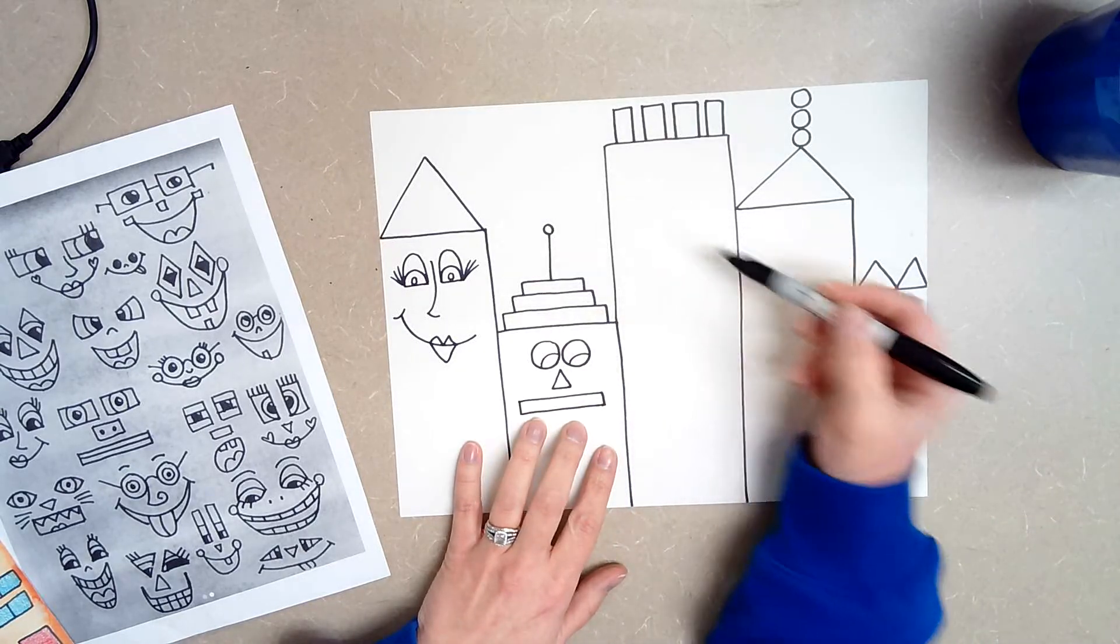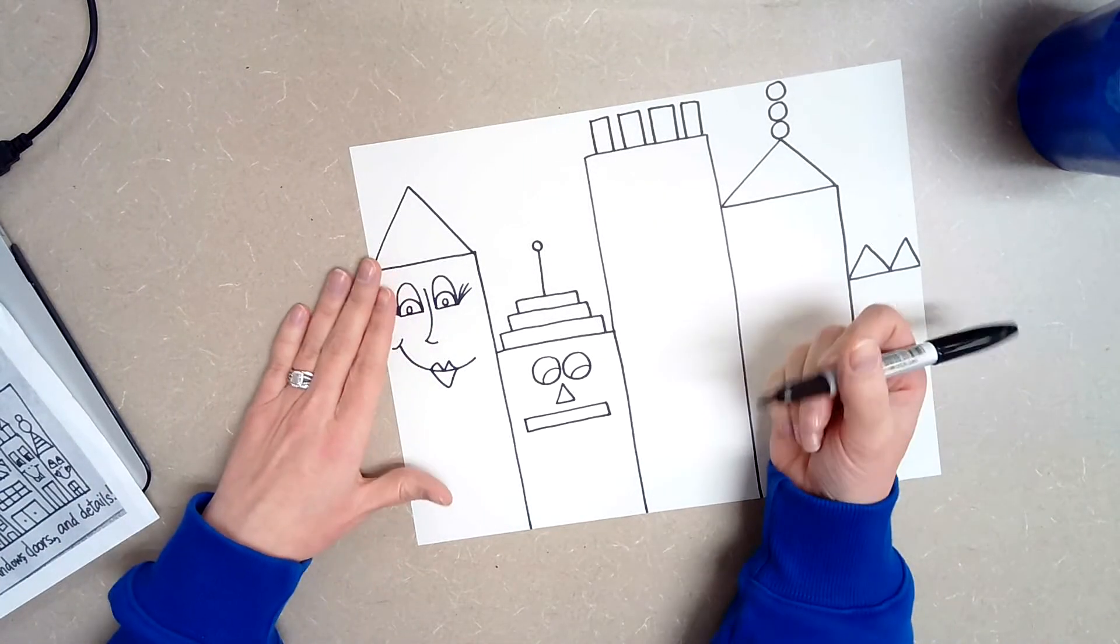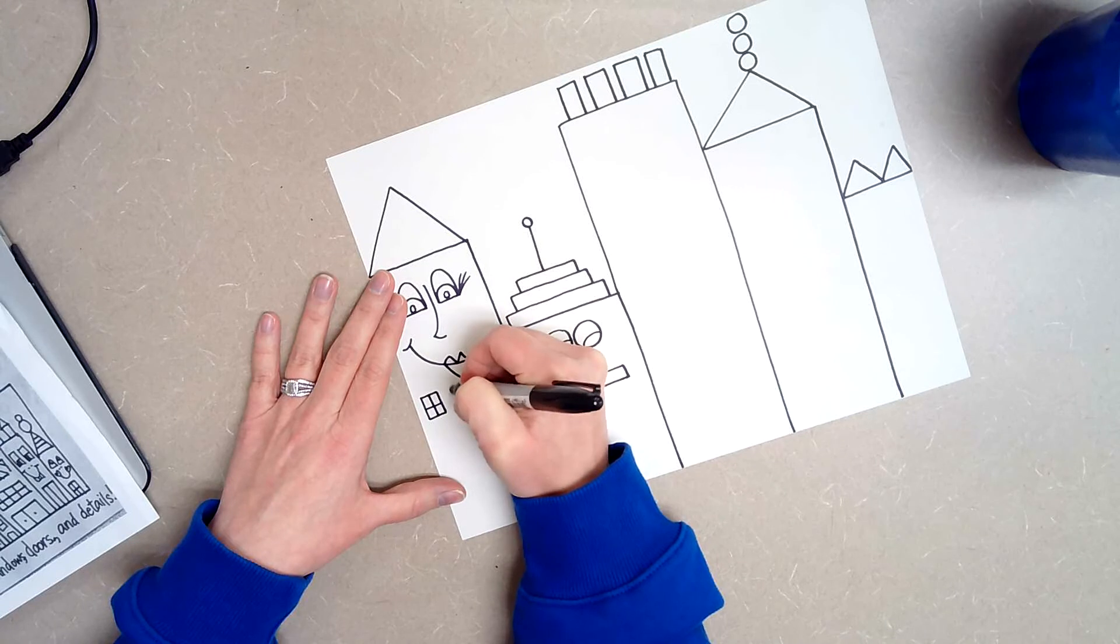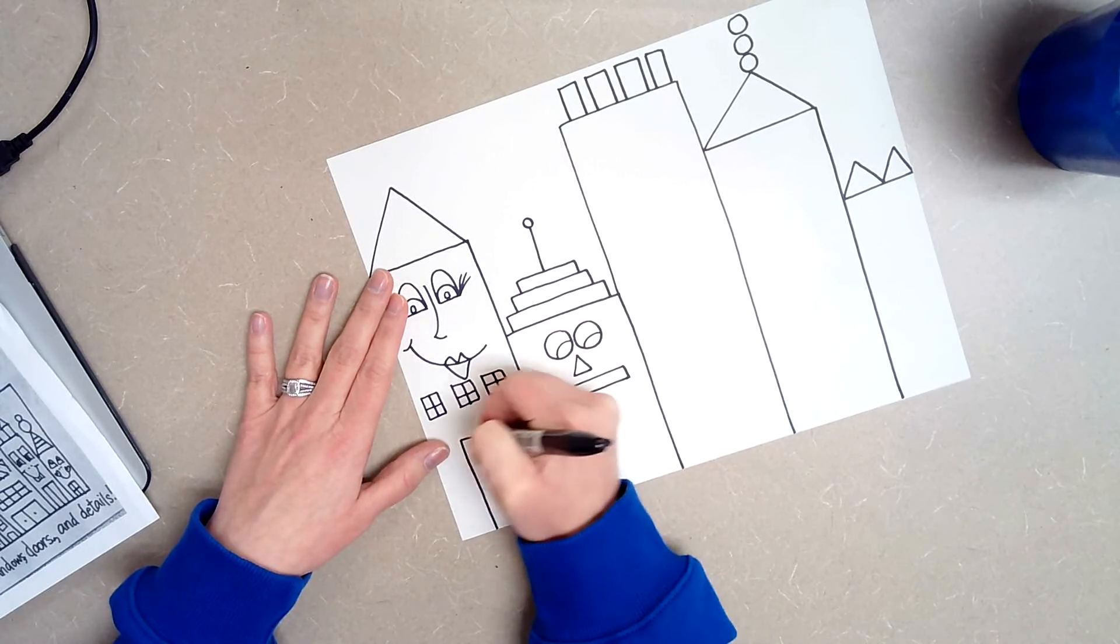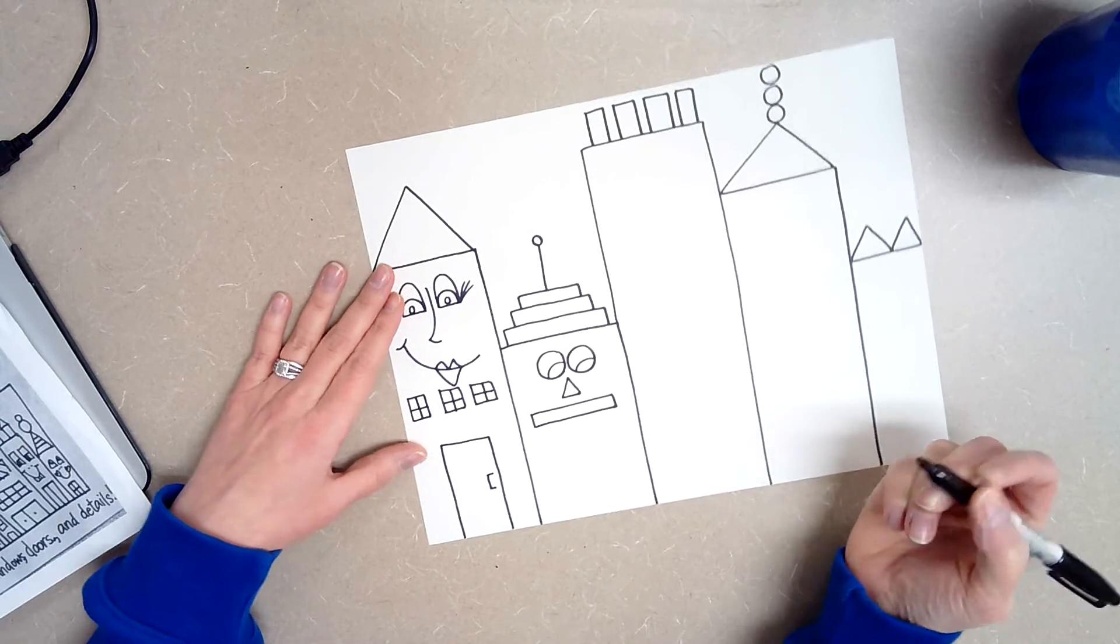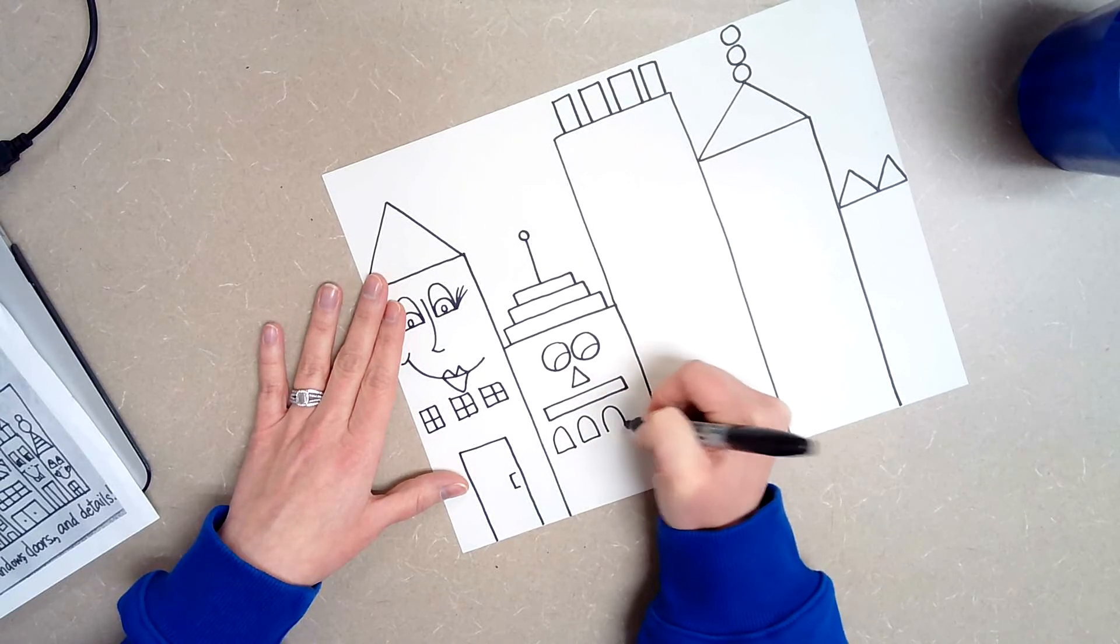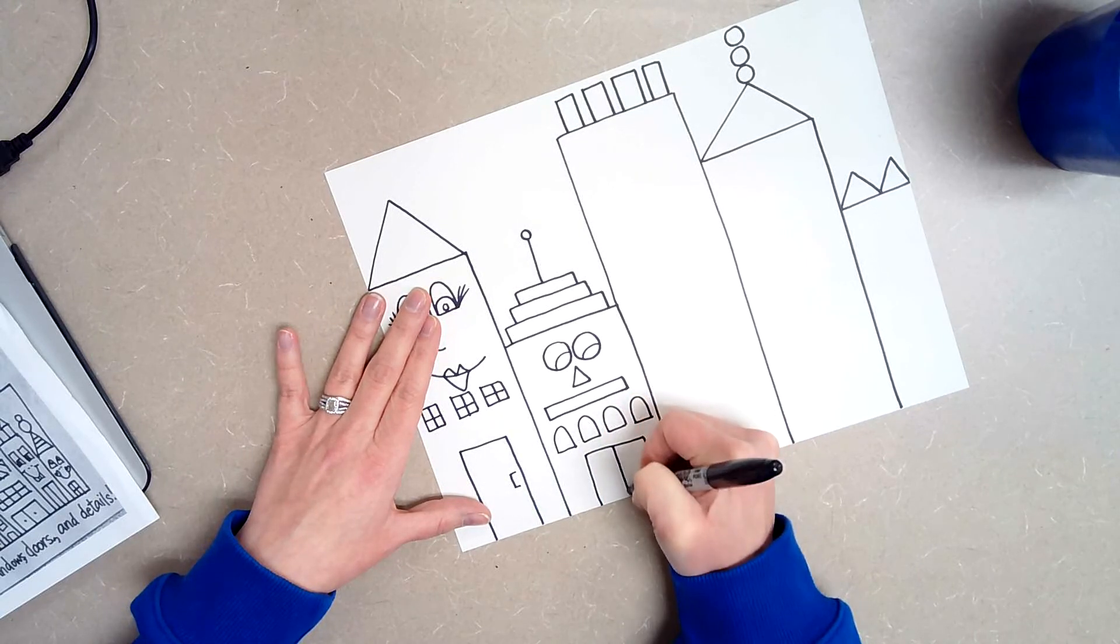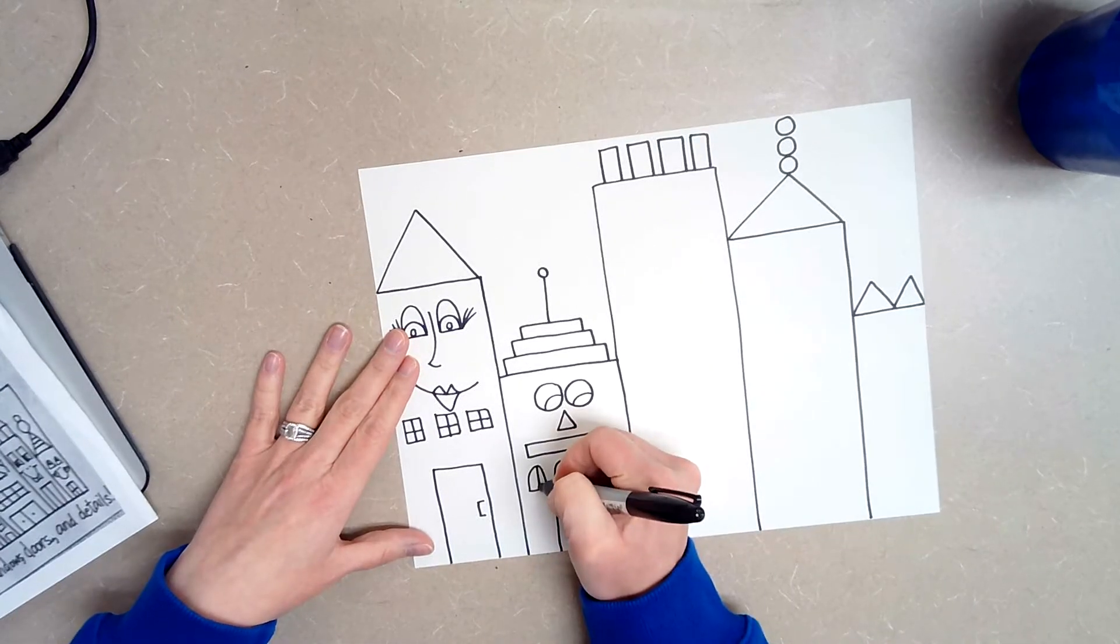Okay, so you are going to go in and add silly faces to all of your buildings. Once you have that done then you need to go in and add windows and doors to your buildings. You could do regular squared windows with regular doors like that, or you could get kind of fancy and you could do windows that look like this. It's up to you what kind of windows and doors you add to your city.